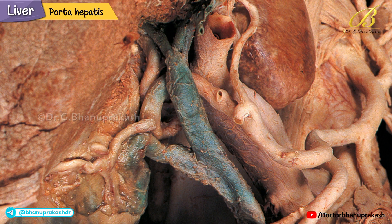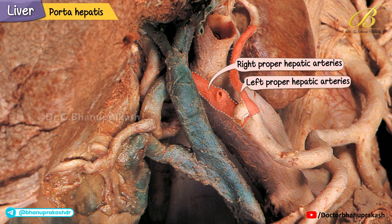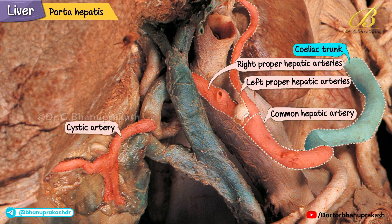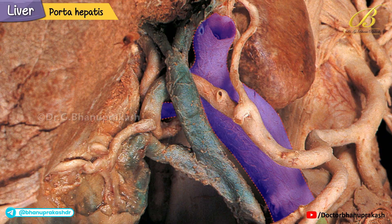This illustration shows the porta hepatis of the liver. Blood reaches this area mainly through the right and left proper hepatic arteries, which arise from the common hepatic artery, itself a branch of the celiac trunk. The cystic artery supplying the gallbladder branches off from the right proper hepatic artery. You can also see the portal vein dividing here into its right and left branches.